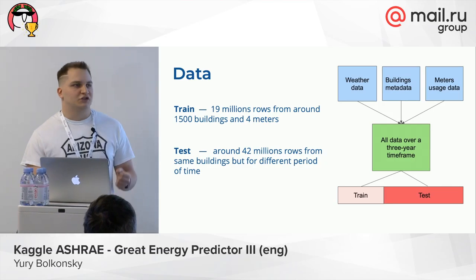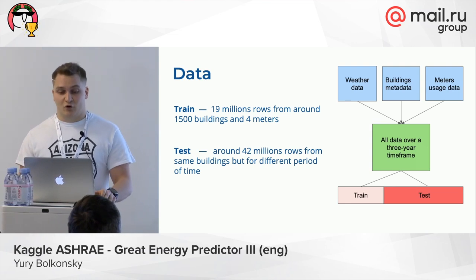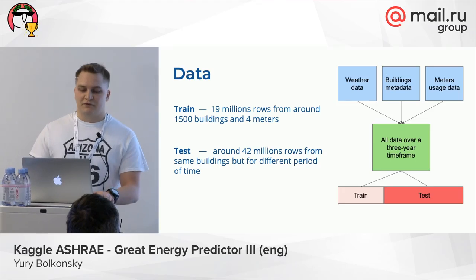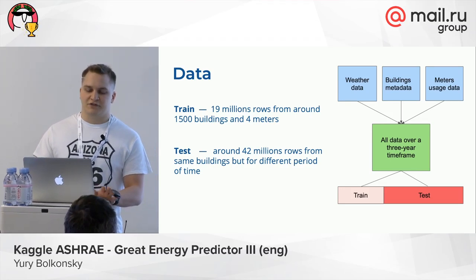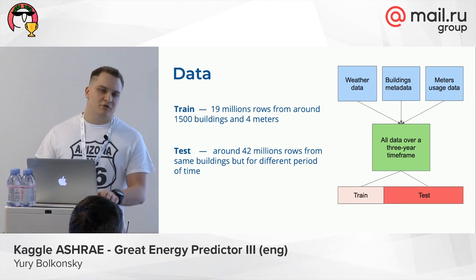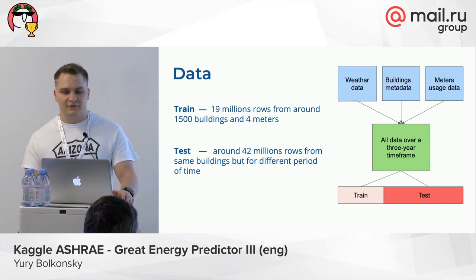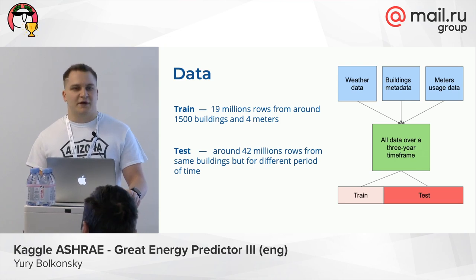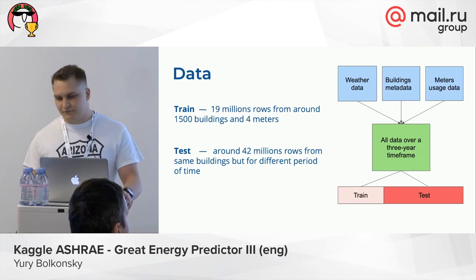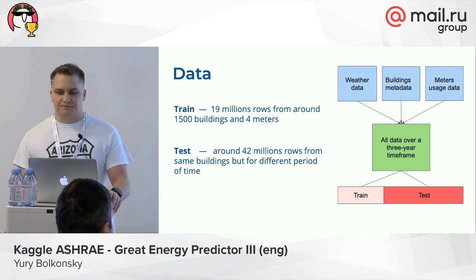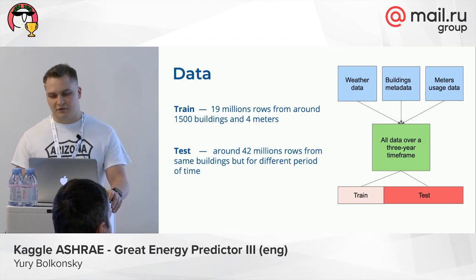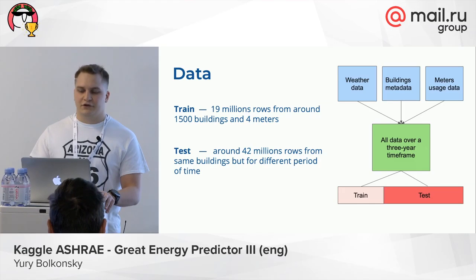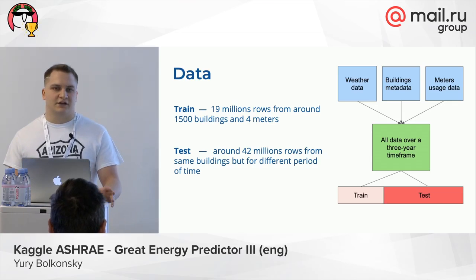What was the data? There was quite a lot of data — about 19 million rows with 1,500 buildings and four meters. In the test set, there were even more: about 42 million rows from the same buildings but for a different period of time. There were three main parts of the data: weather data, building metadata about the year of construction and main occupation (like education or commercial), and also meter usage data for the four meters. All this data was connected in a three-year time frame, split between train and test by time.